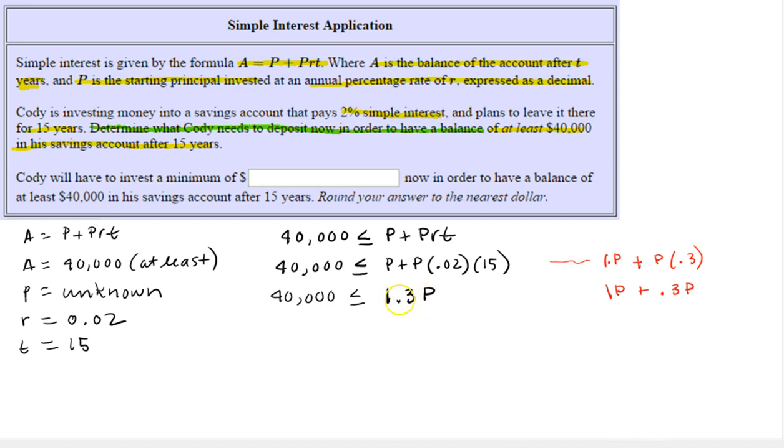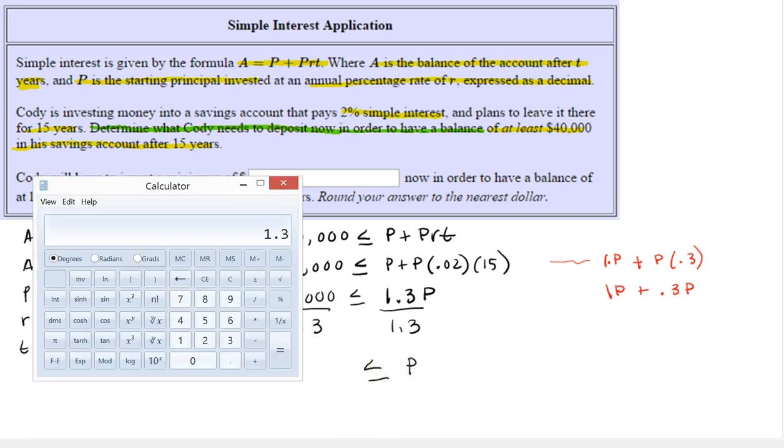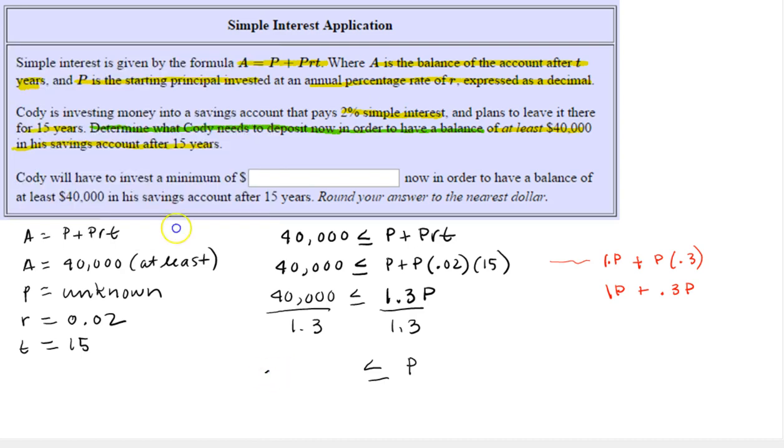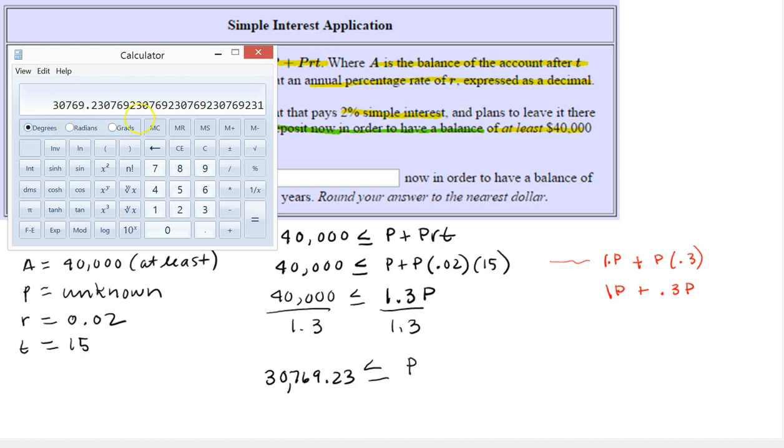Now to isolate P, we're going to divide by 1.3. And I'm going to do this on the calculator. So 40,000 divided by 1.3 equals this. So I'm going to approximate this to the nearest cent for now. So 30,769.23. Let's double check that. 30,769.23. Excellent.